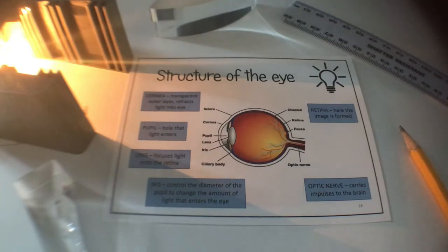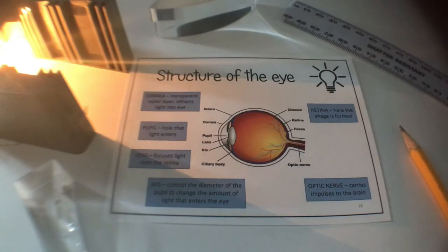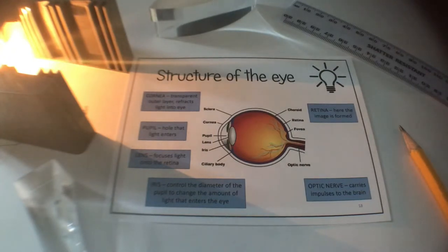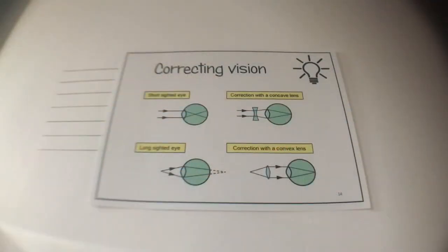We've got the lens, which is able to change its thickness depending on whether you're focusing on an object that's close or far away. The iris controls the size of the pupil and the amount of light that goes in. The image forms on the retina at the back of the eye, and that image is converted into an impulse which goes to the brain.